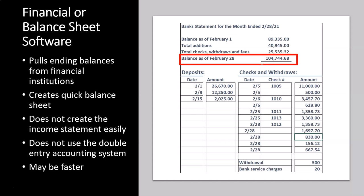You can't see that as easily directly from the creation of the financial statements, although this software may also download the checking data to give you the detail of the checking. But then you're going to have to use that checking detail to make the income statement. You can see how this software does the balance sheet — the point-in-time statement — quite easily, but it's not compiling the income statement because it's not using the double-entry accounting system. You may still be able to download the transactions from the bank, but then you'll have to do the compiling yourself — grouping the cash inflows and outflows into categories. You'll have to do more work to do that categorization on the income statement.